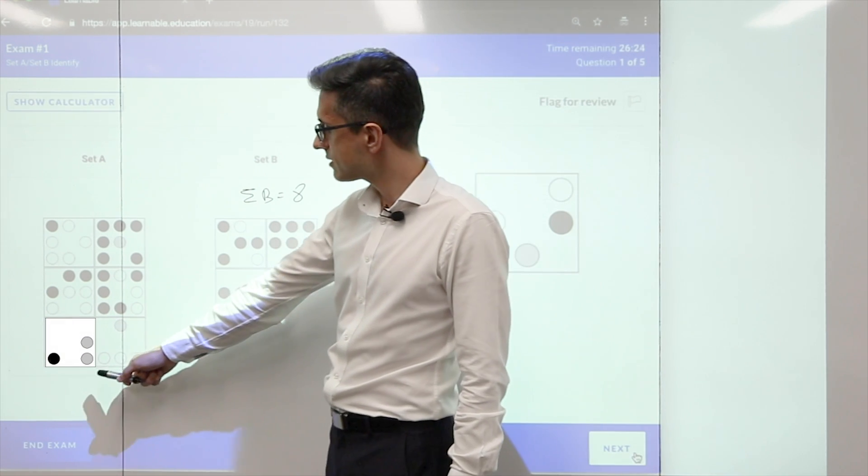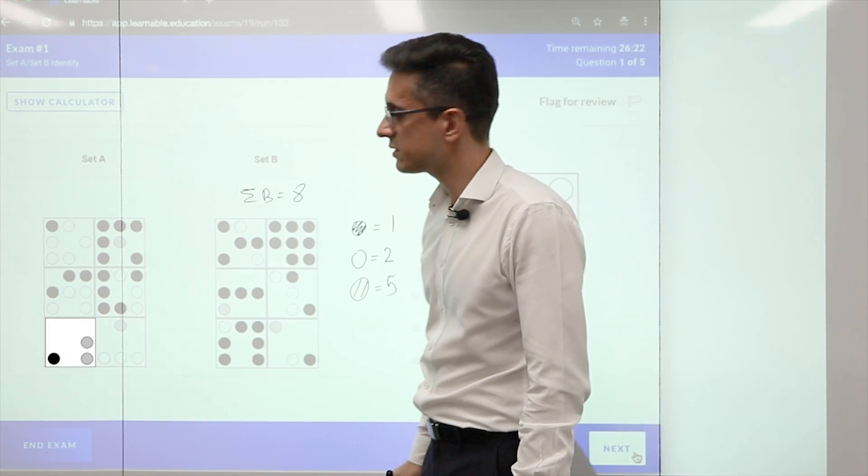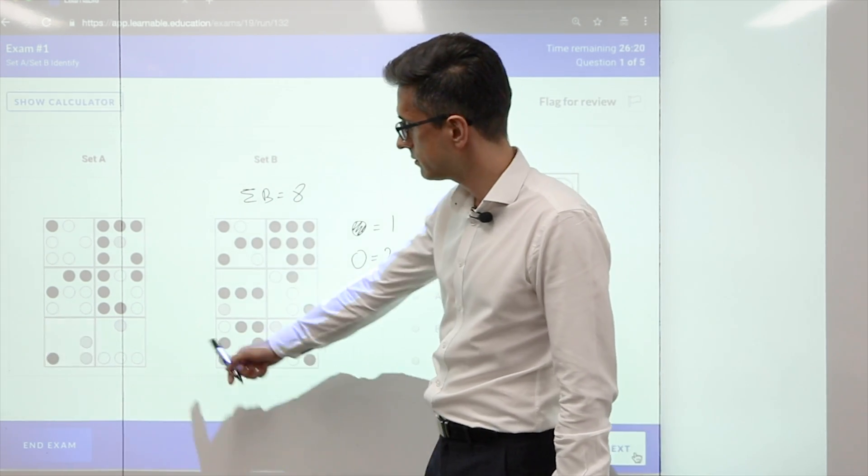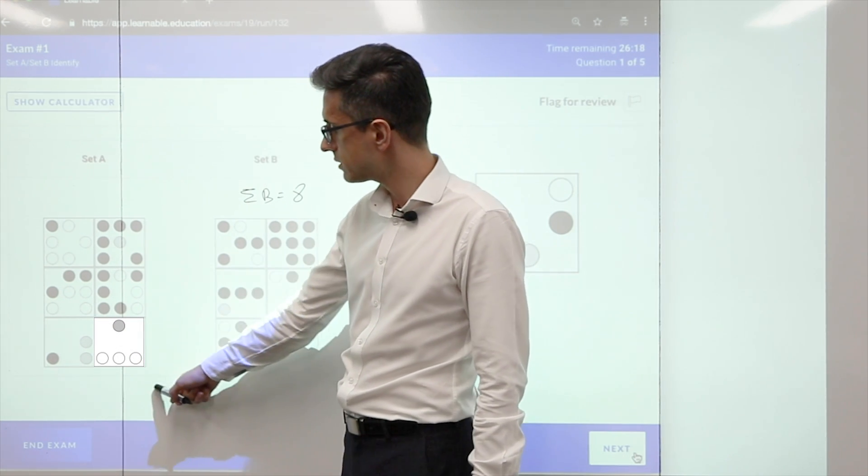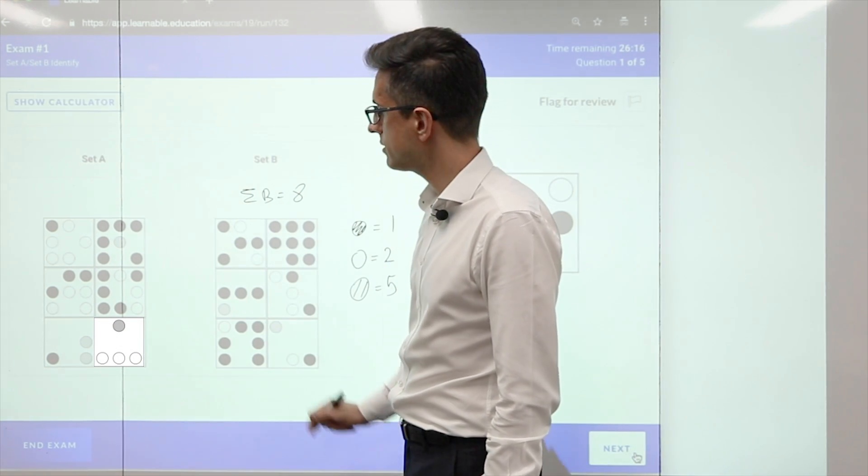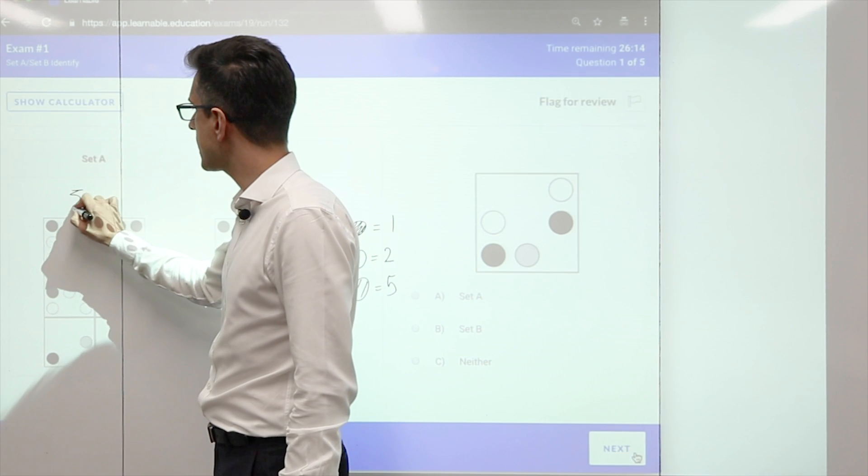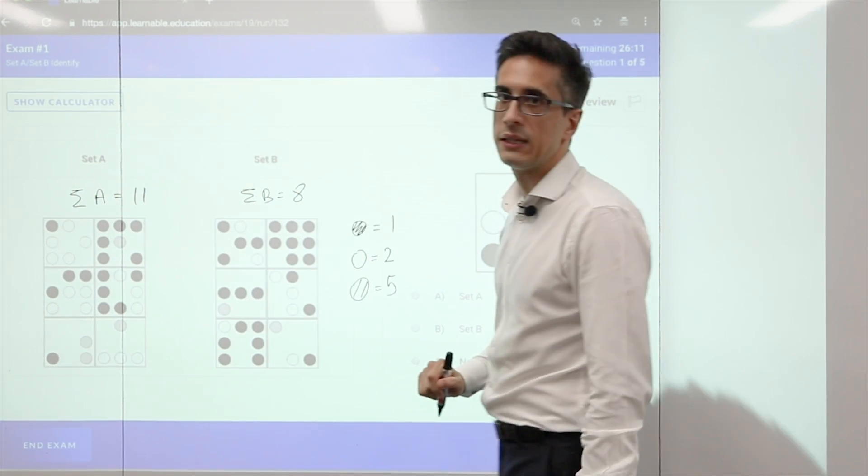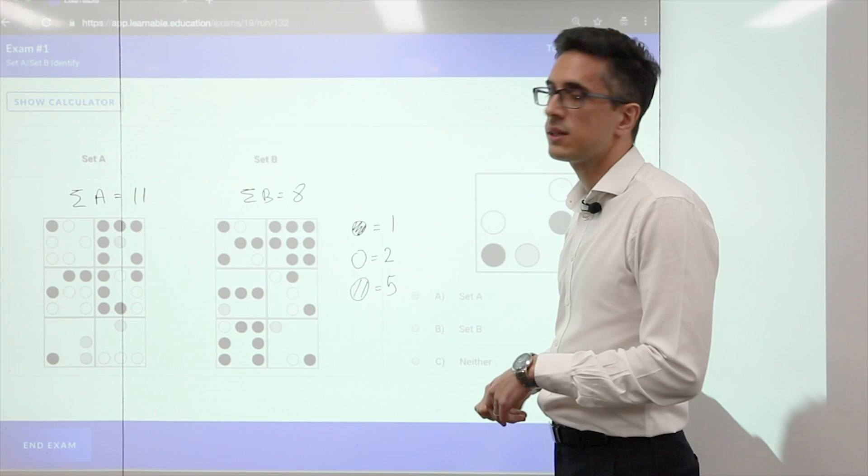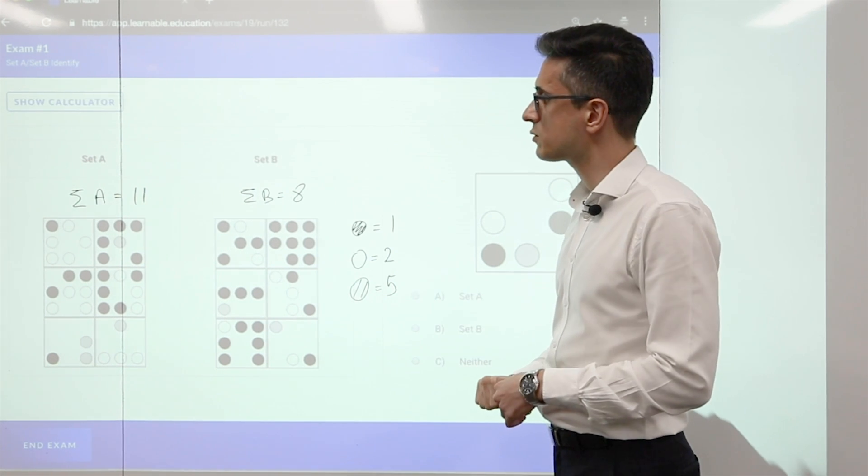If I go to the bottom left in set A, I've got 5 plus 5 plus 1 is 11. Bottom right, I've got 2, 4, 6 plus 5 is 11. So the total for set A must be 11. And of course, I would check with the other squares and I would find that that's true.